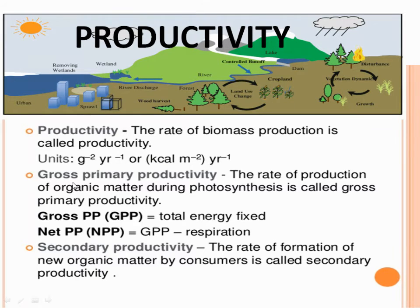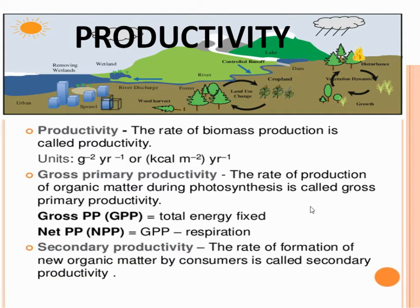Productivity includes gross primary productivity, net primary productivity, and secondary productivity. Gross primary productivity is the rate of production of organic matter by the green plants only during photosynthesis. That means how much organic matter is produced by the process of photosynthesis is called gross primary productivity.